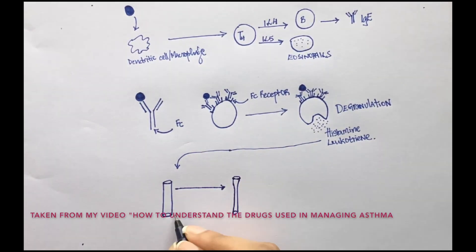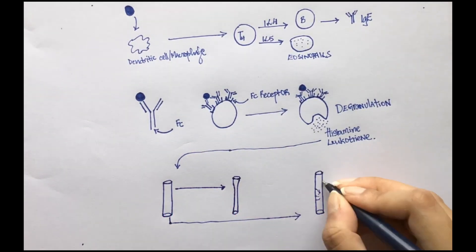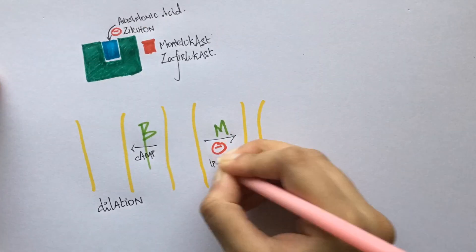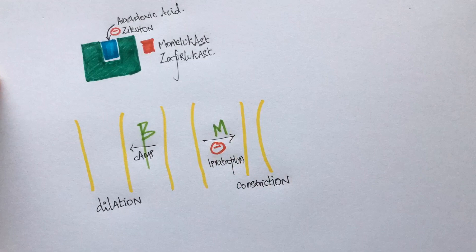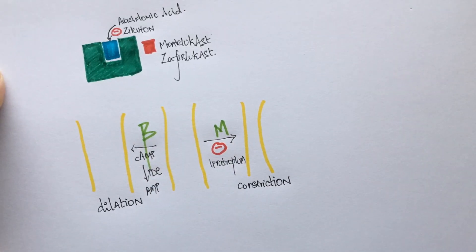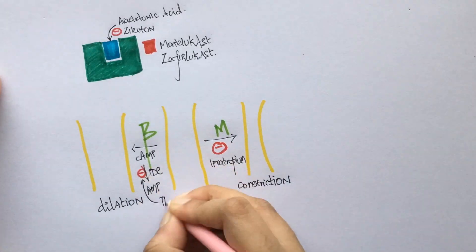Asthma has two processes that are going on. Number one is bronchoconstriction. Number two is airway secretion and inflammation. Ipratropium works by blocking muscarinic receptors, hence preventing bronchoconstriction. Theophylline prevents the breakdown of cAMP, hence causes bronchodilation.